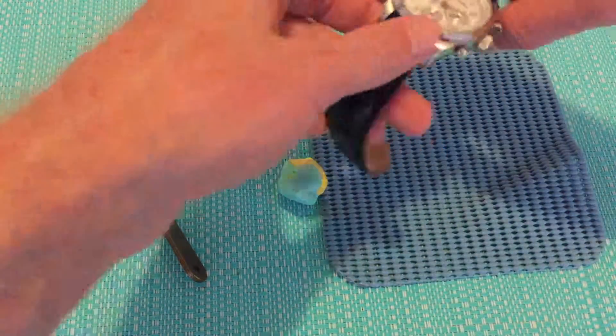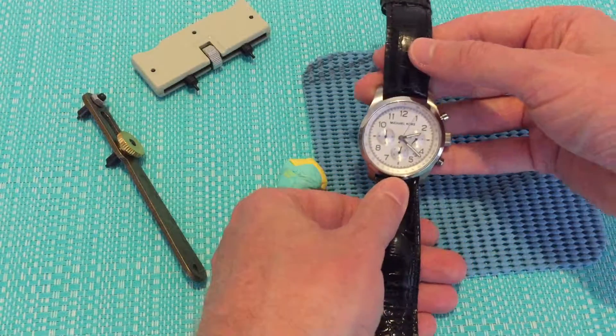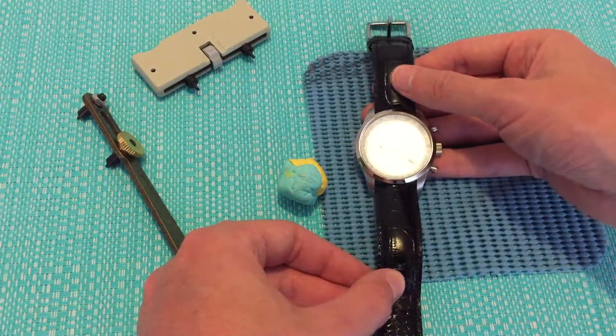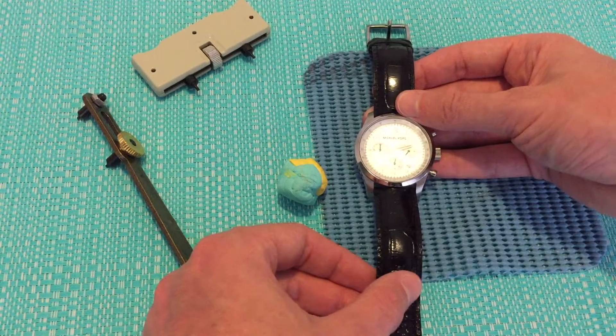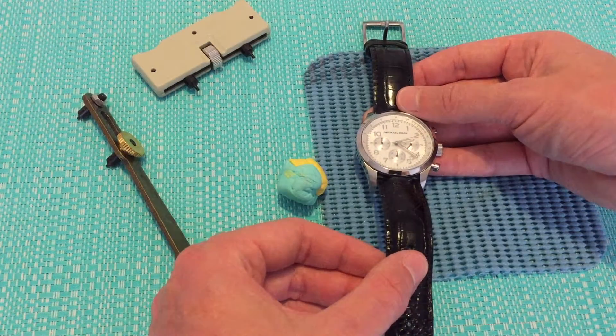There you have it. That's how to change a watch battery on a twist-back case. What else we'll do—we're just going to have a quick look at how to do it with a piece of blu-tack.